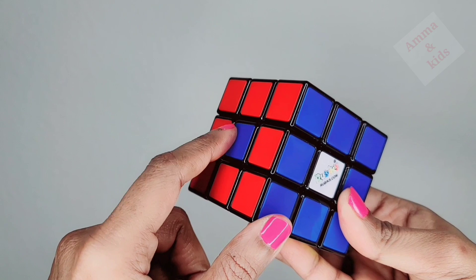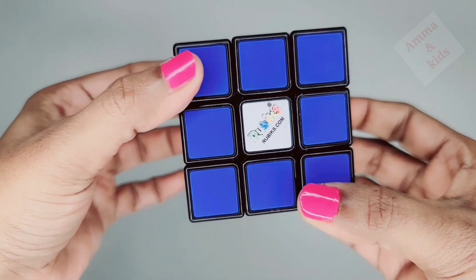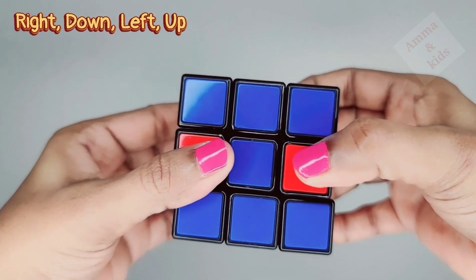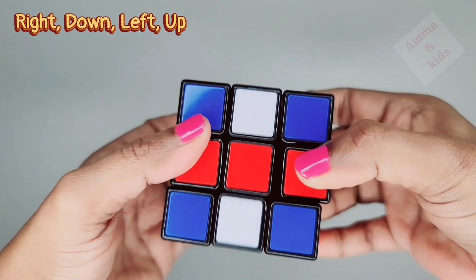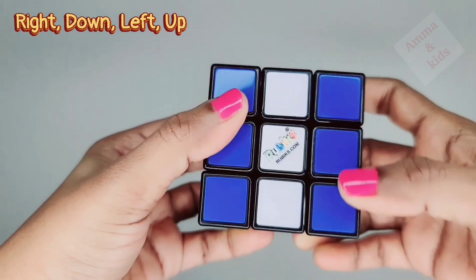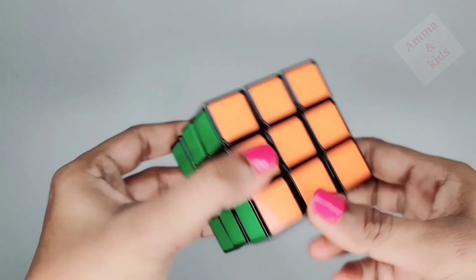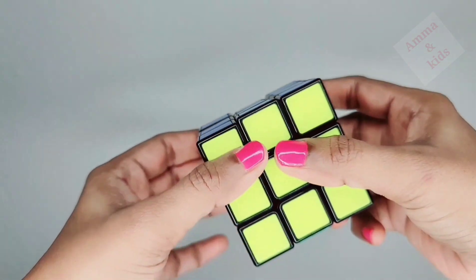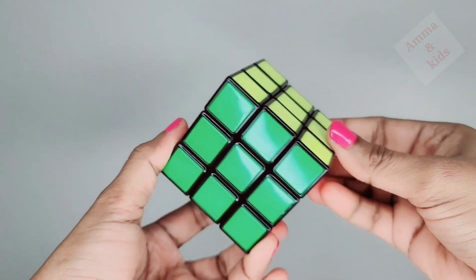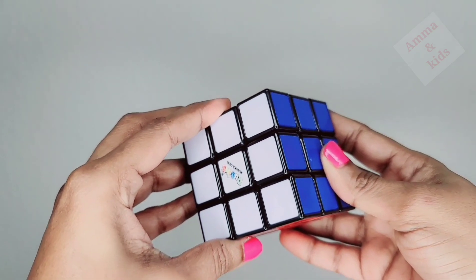So the formula is right, down, left, up. We got the solved Rubik's cube. So simple, isn't it? Bye bye friends, that's it for today.